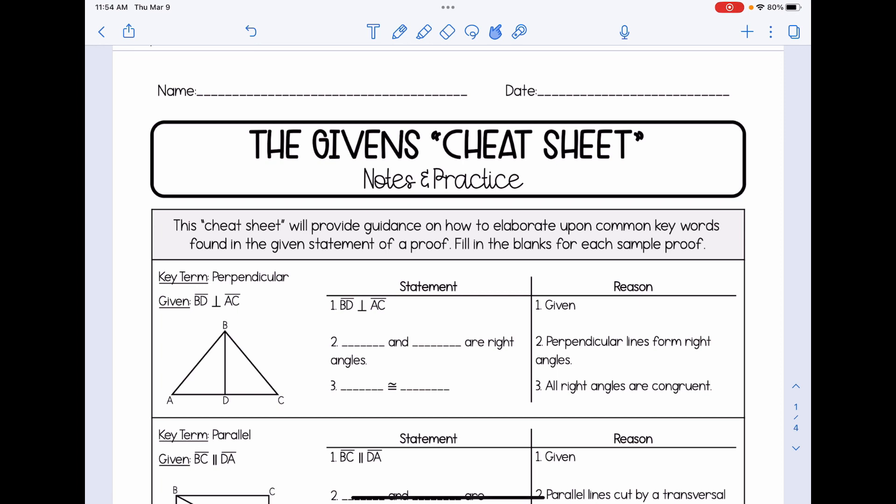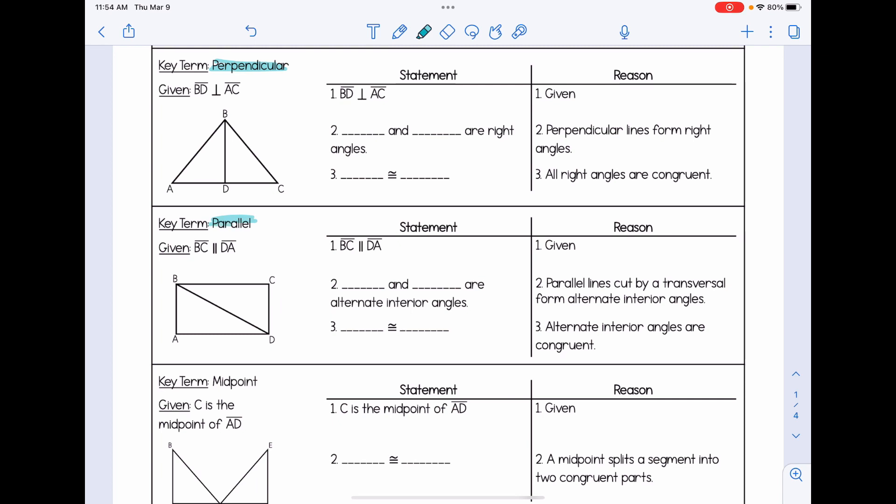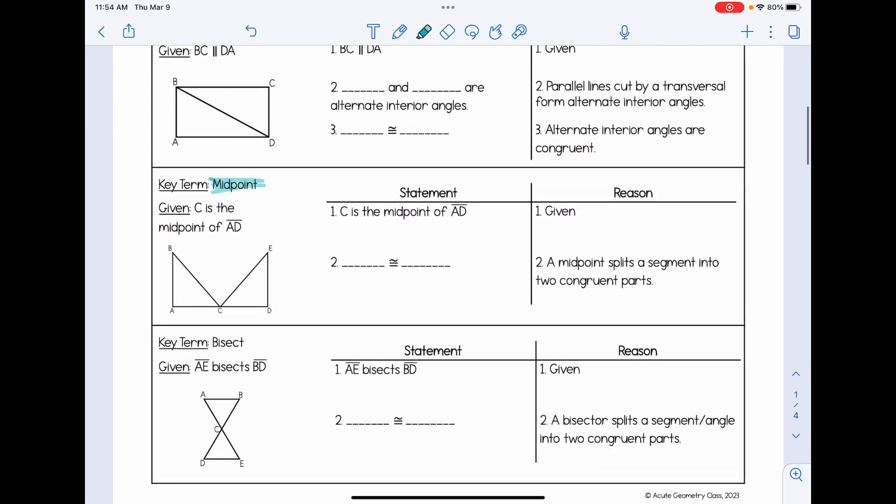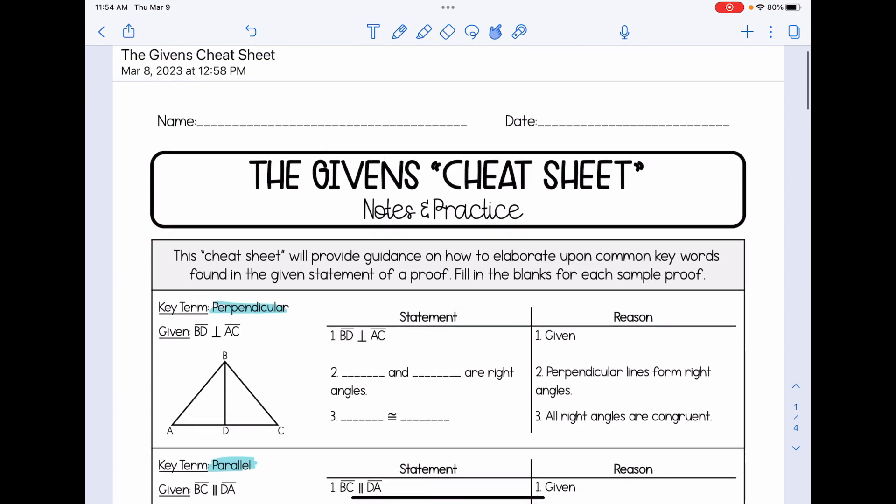So there are four key terms that we're going to go over in this video. The first one will be perpendicular, then parallel, then midpoint, and then bisect. Let's start with perpendicular.